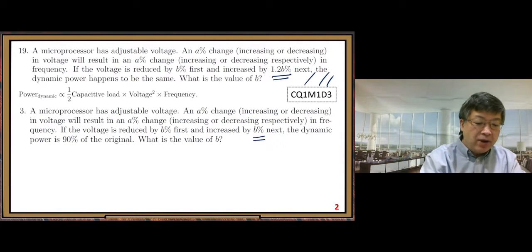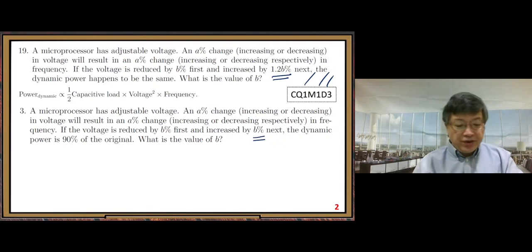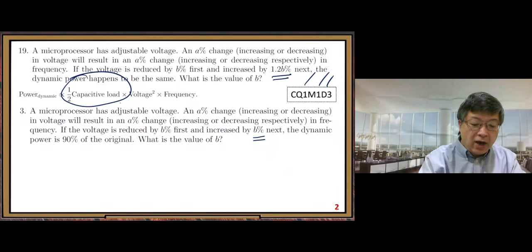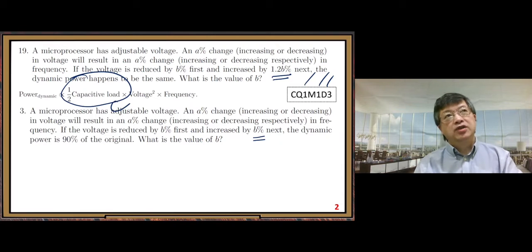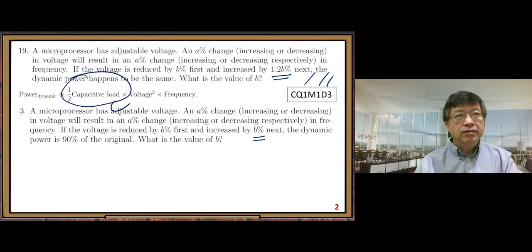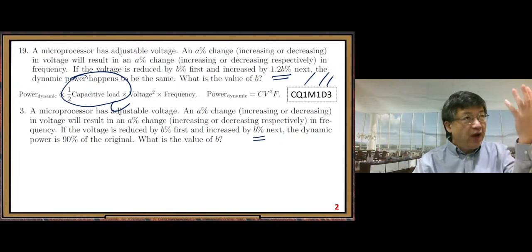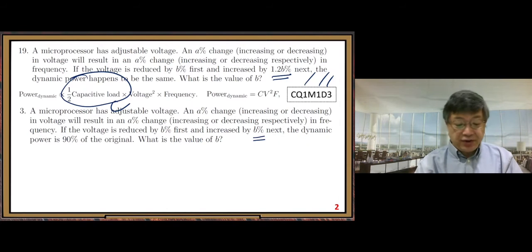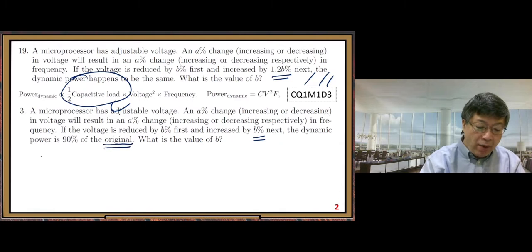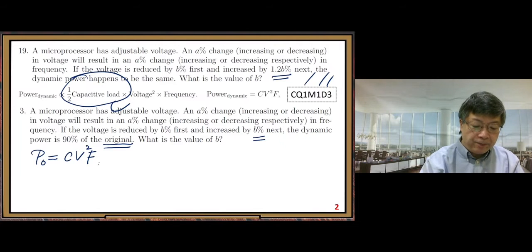First, we need to use the dynamic power formula. When we use, we can use some abstract constant C here. We don't need the exact number for the C, just some abstract constant C. Then we can represent as C times V squared times frequency F. All right. Then when we write the original, before any change, because we want to do comparison, the original dynamic power, let us use P0 equals C V squared F, original.